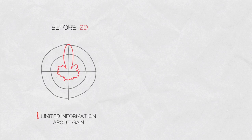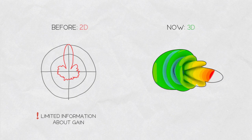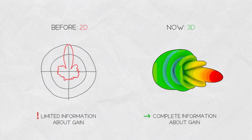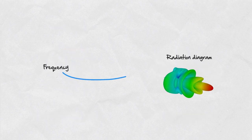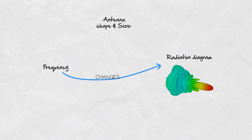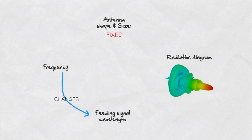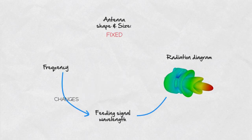Back in time when computers were weak, scientists displayed gain in two-dimensional polar plots because they are easy to draw on paper. Today, 3D radiation diagrams are easy to produce and should be used because they provide a more complete picture about gain. Radiation diagrams also change with frequency. The shape and size of any antenna are usually fixed, but the wavelength of the feeding signal changes with frequency, which influences the radiation diagram.